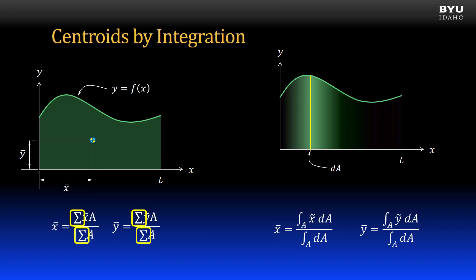The summations in our x bar and y bar equations become integrals over the area of the shape. Each little rectangle is an infinitesimally small dA with a width dx. Since that dx is so small the x tilde dimension to the centroid is x.